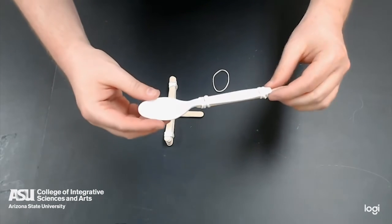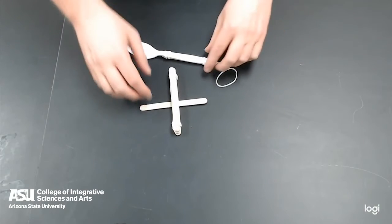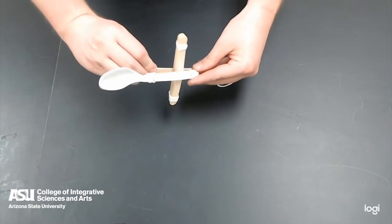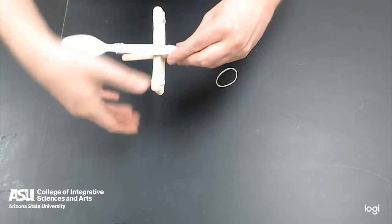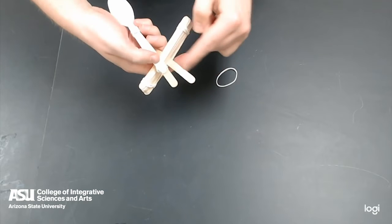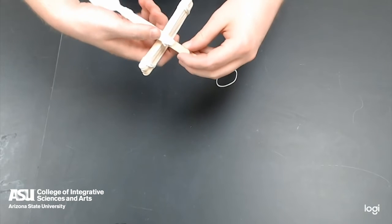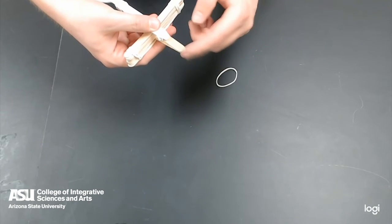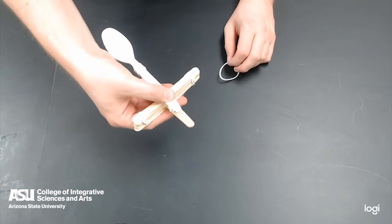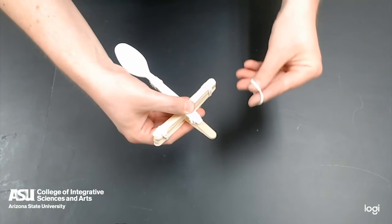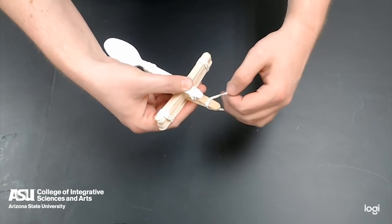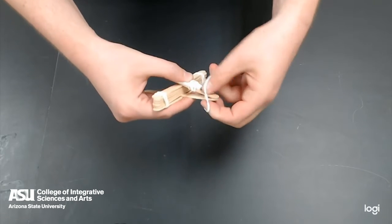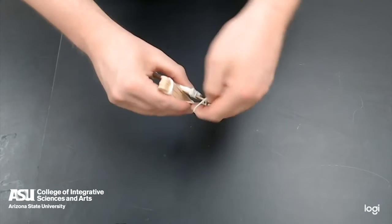The catapult arm is now ready. For the last step, we're going to be putting these two pieces together. The shorter side is going to be the front end of the catapult. And what you're going to do is line these two popsicle sticks together at the front. With them lined together at the front, use your last rubber band and wrap it around the front of this multiple times.